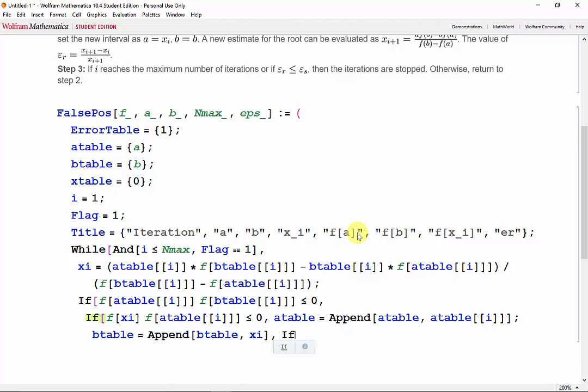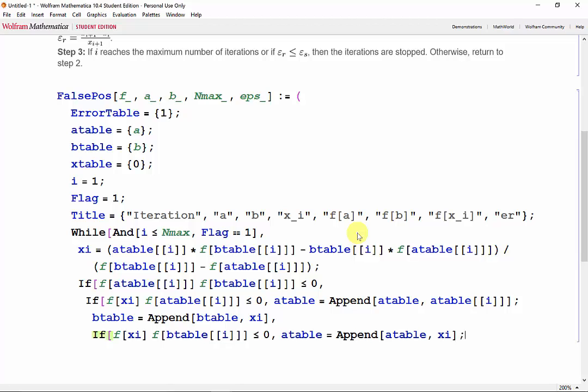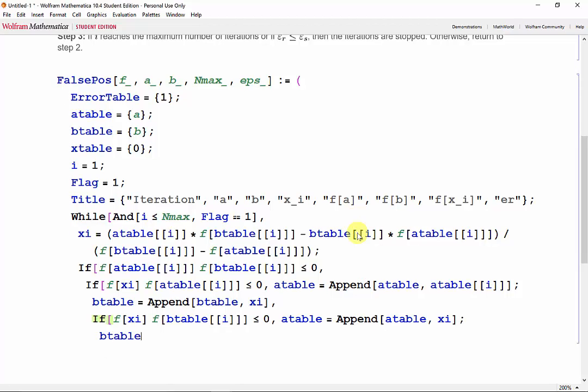And otherwise, check if f(xi) times f(btable[i]) is less than or equal to 0. In which case, xi is appended into atable and b is appended into btable.